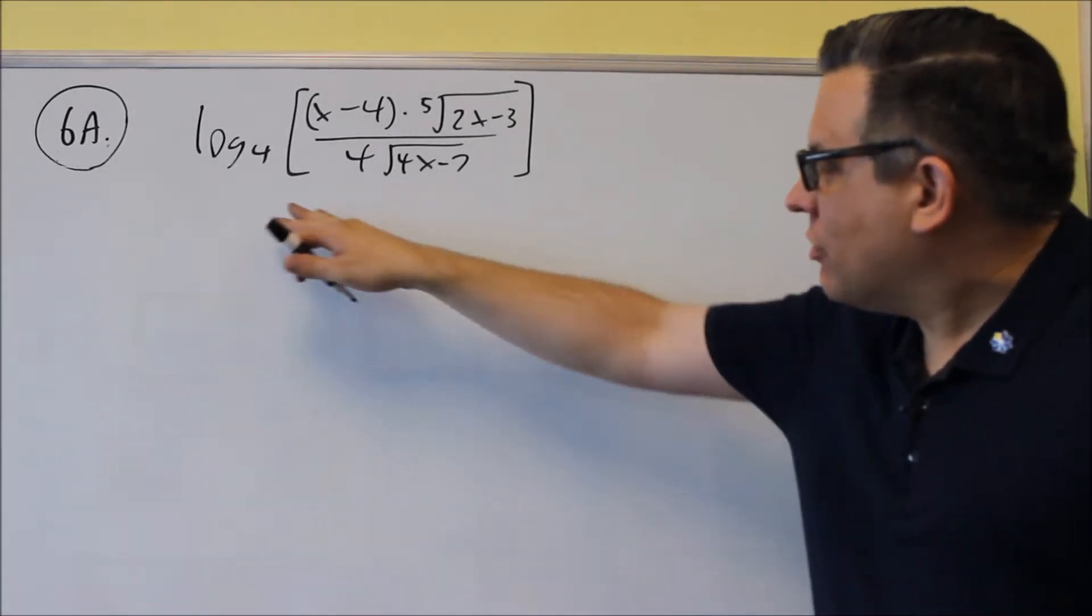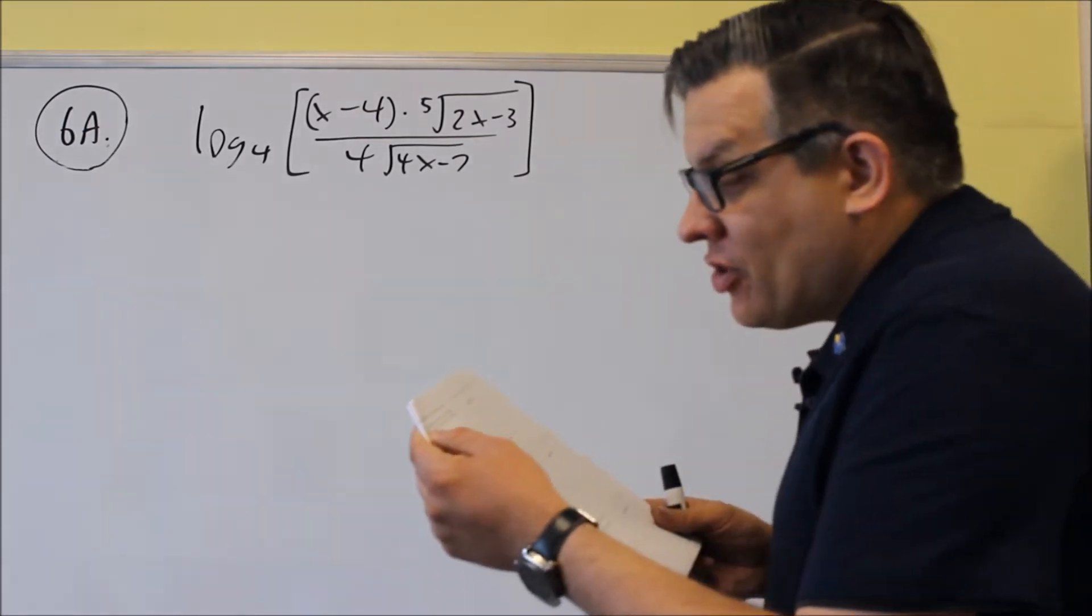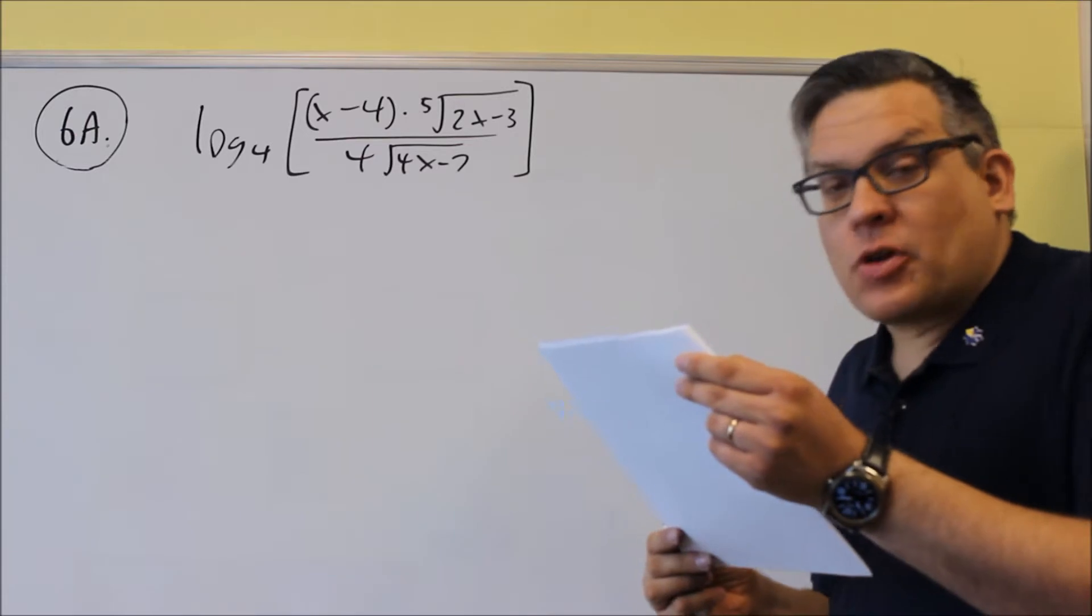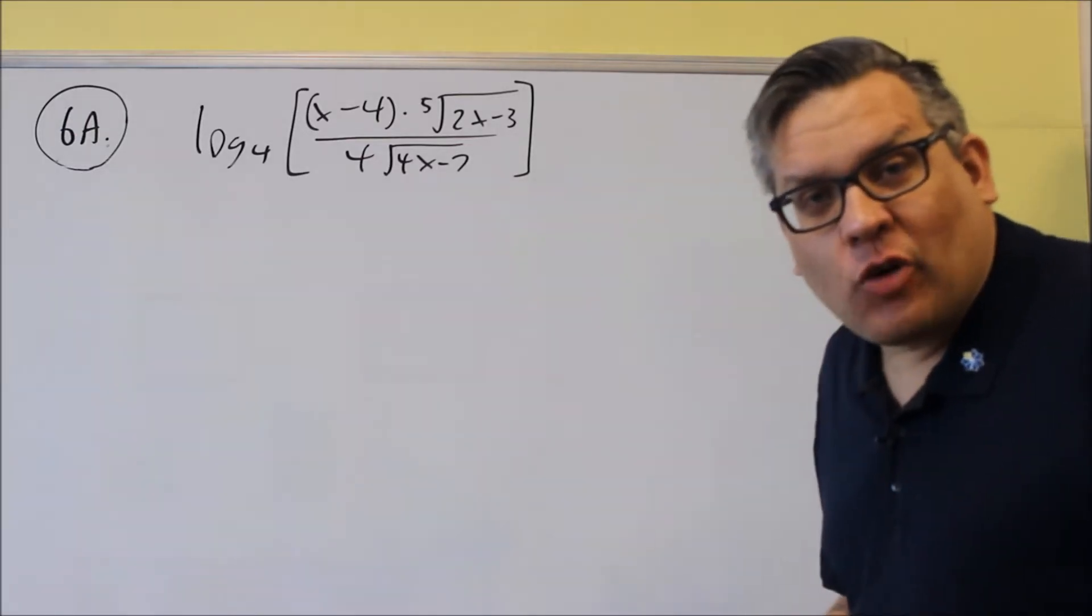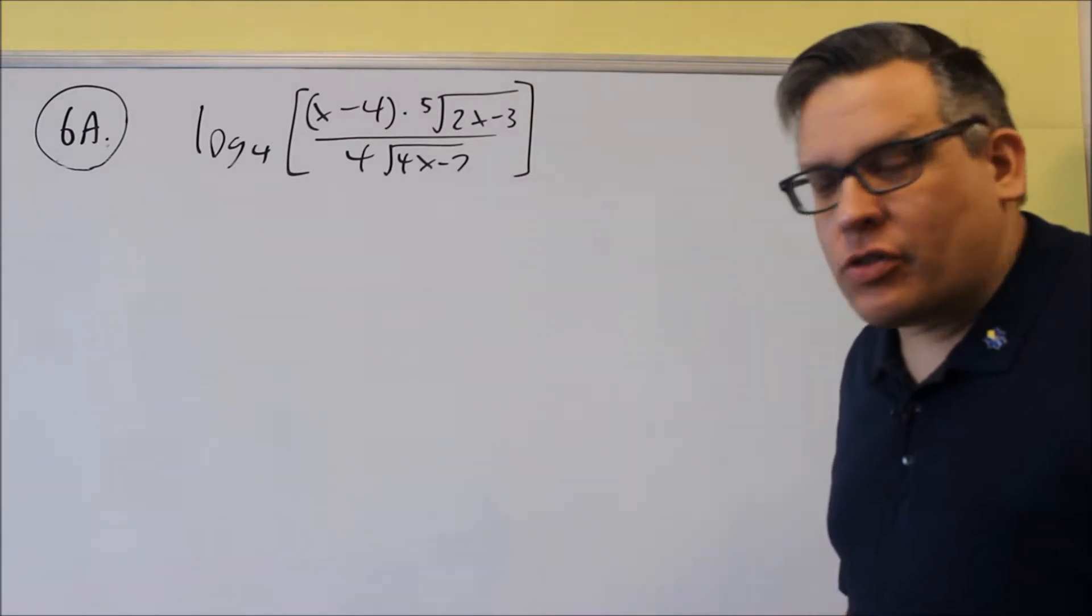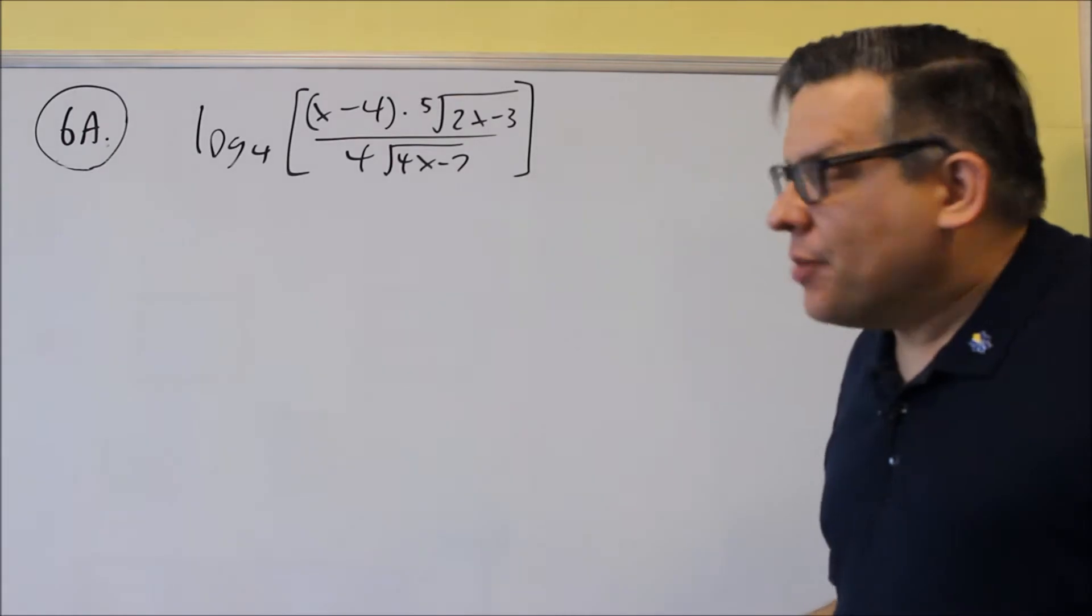Number 6a asks us to write this as an expansion. So it says, use property of logs to expand it as much as possible, where possible, evaluate log expressions. So what they mean by that is you end up with log 4 of a number or something like that and you can actually evaluate it and do it.